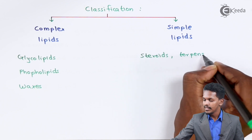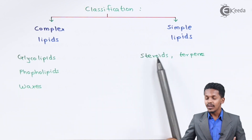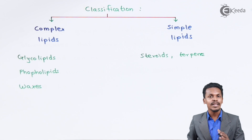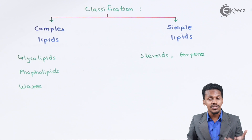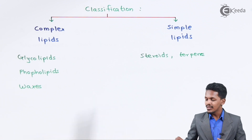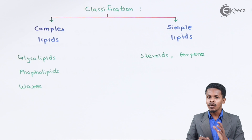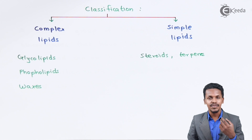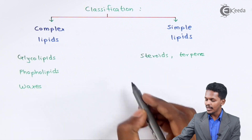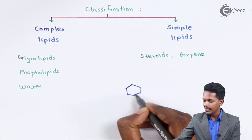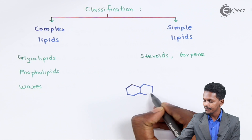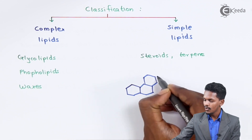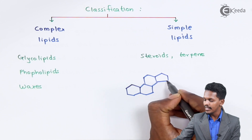Steroids play a very important role — for example, as hormones like sex hormones such as progesterone and testosterone. Cholesterol, progesterone, and estrogen all share a common structure. That common structure is phenanthrene, to which a five-membered ring is attached.